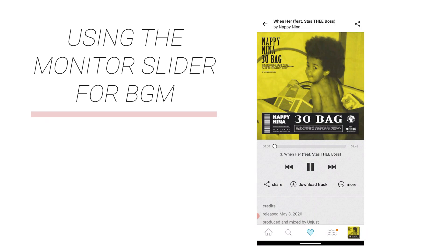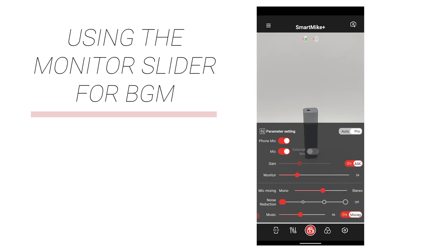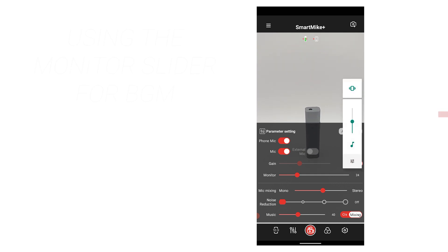There's also a monitor slider. The monitor slider controls the volume of the sound you hear during the recording. It is important to note that the monitor slider controls the sound you hear, not the sound or volume of the recording. If you want to adjust the volume of your voice or background music in your recording, you will need to use the gain and music sliders. Hence, it is recommended that you record a few seconds of video or audio to test whether the gain and background music volume you set are appropriate before recording.